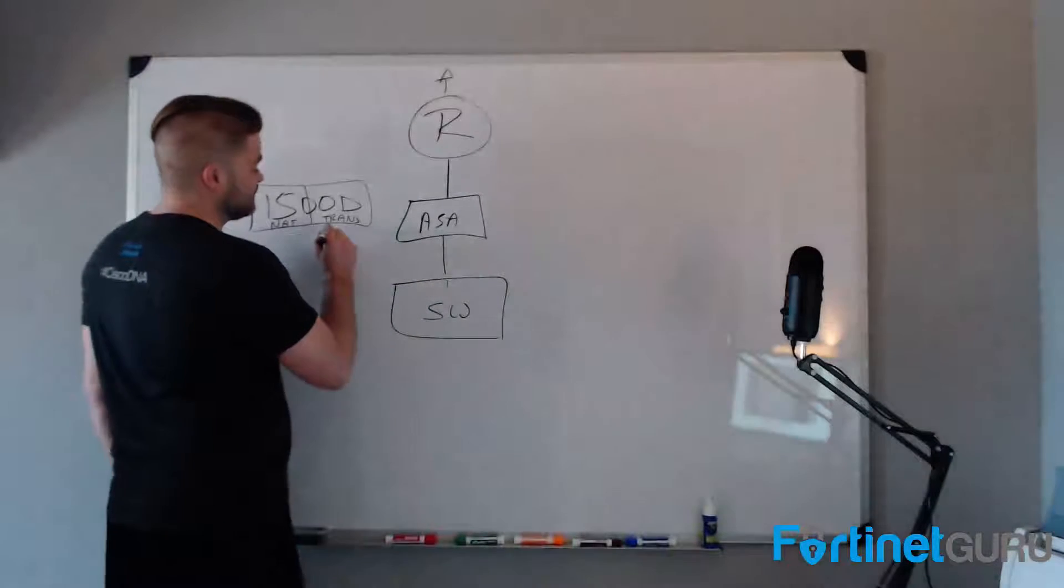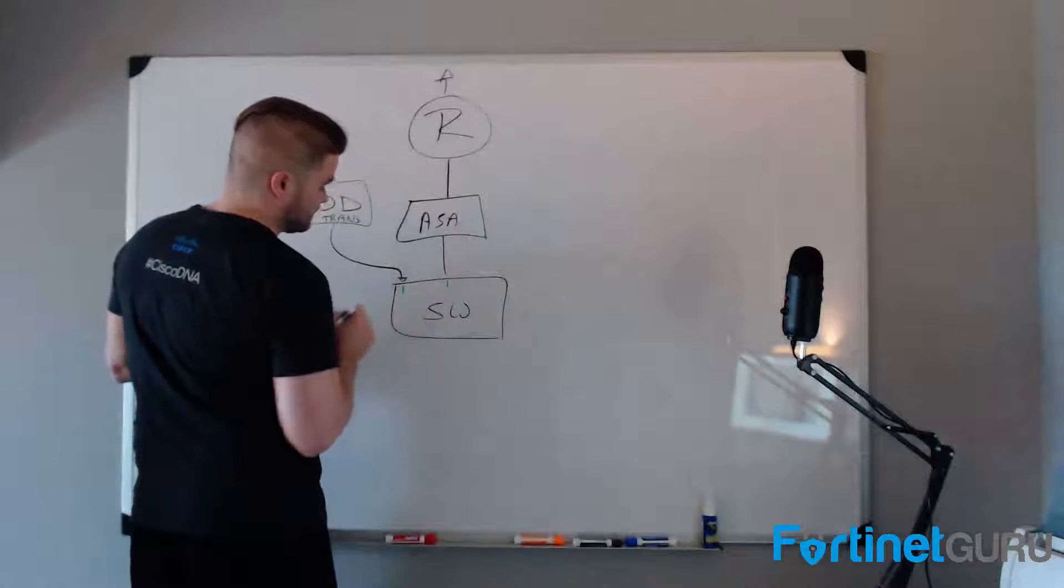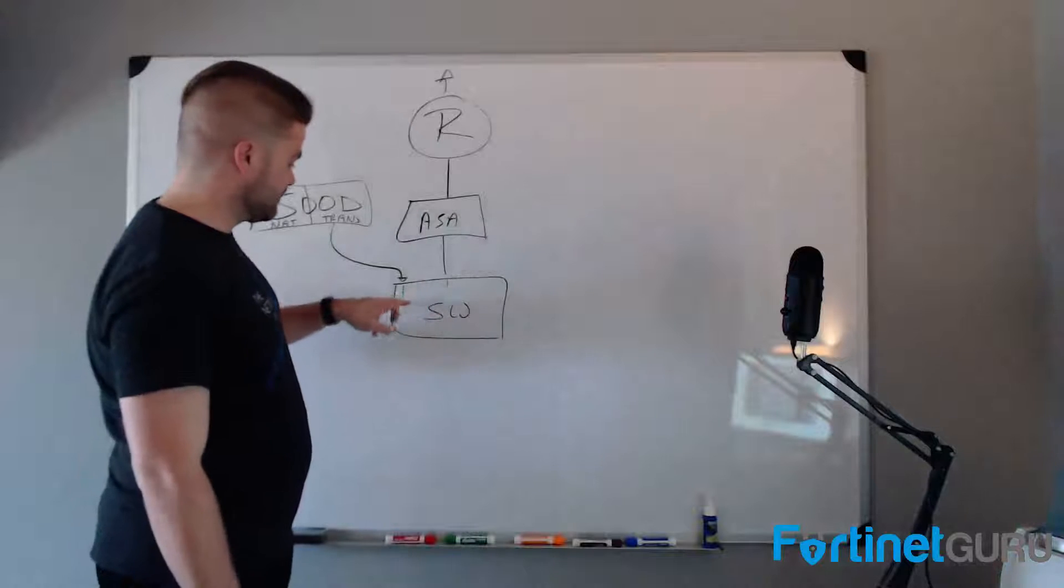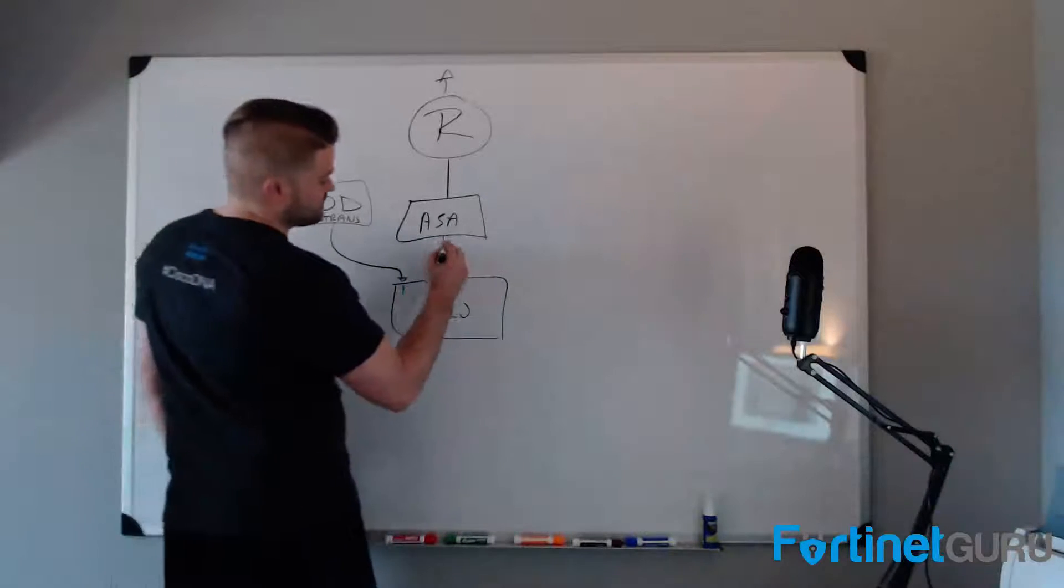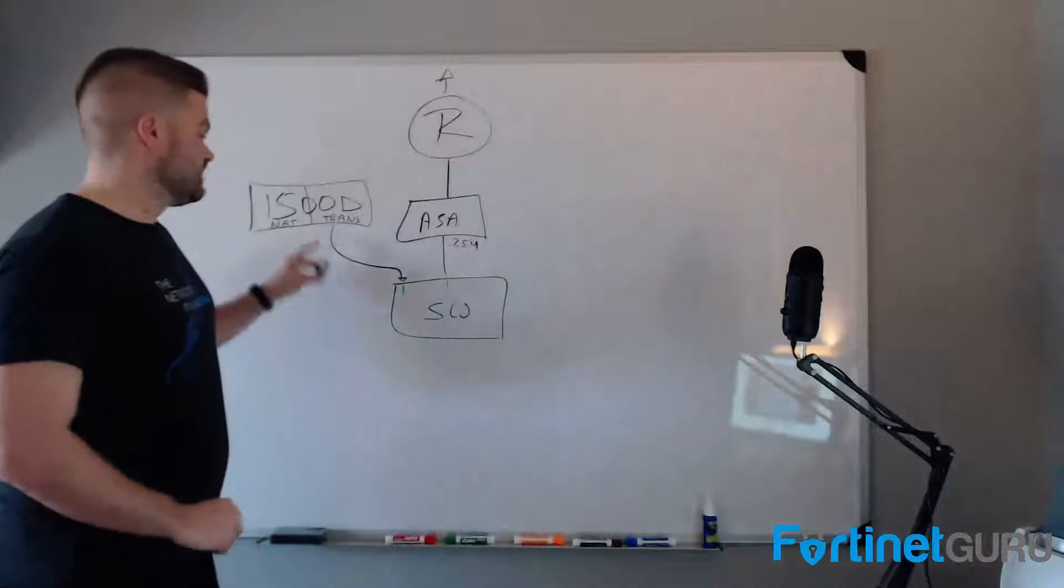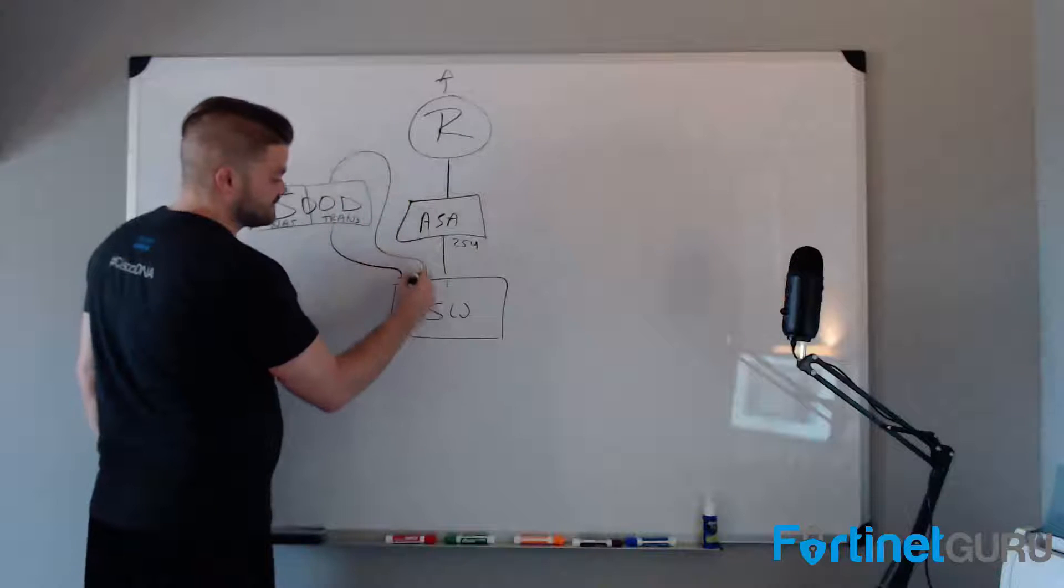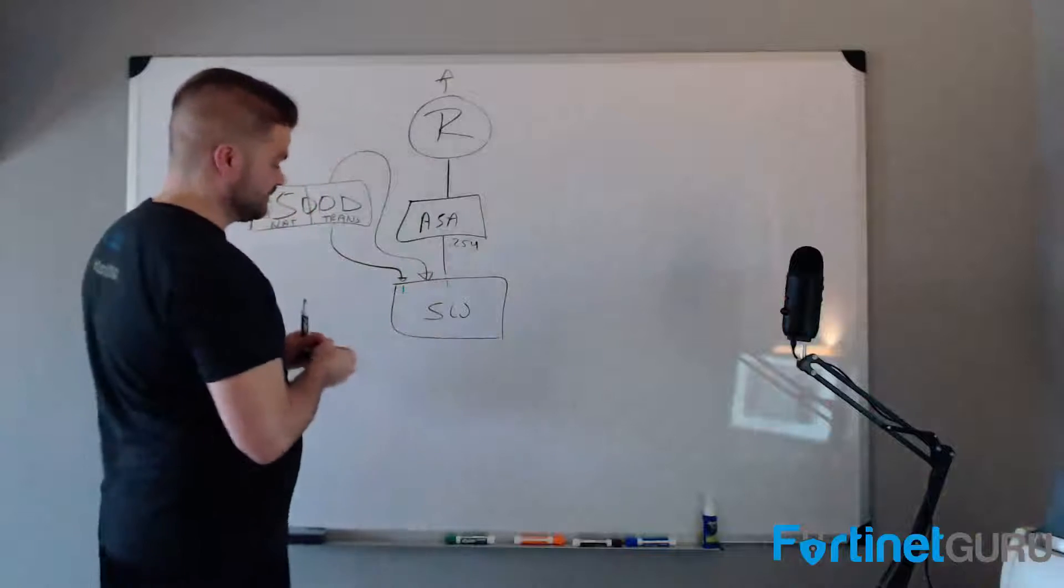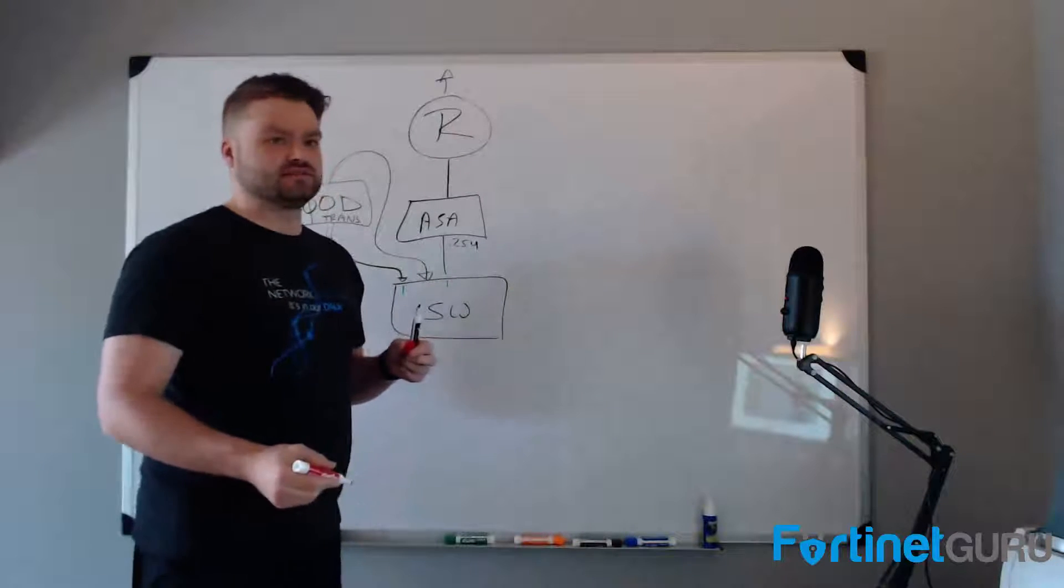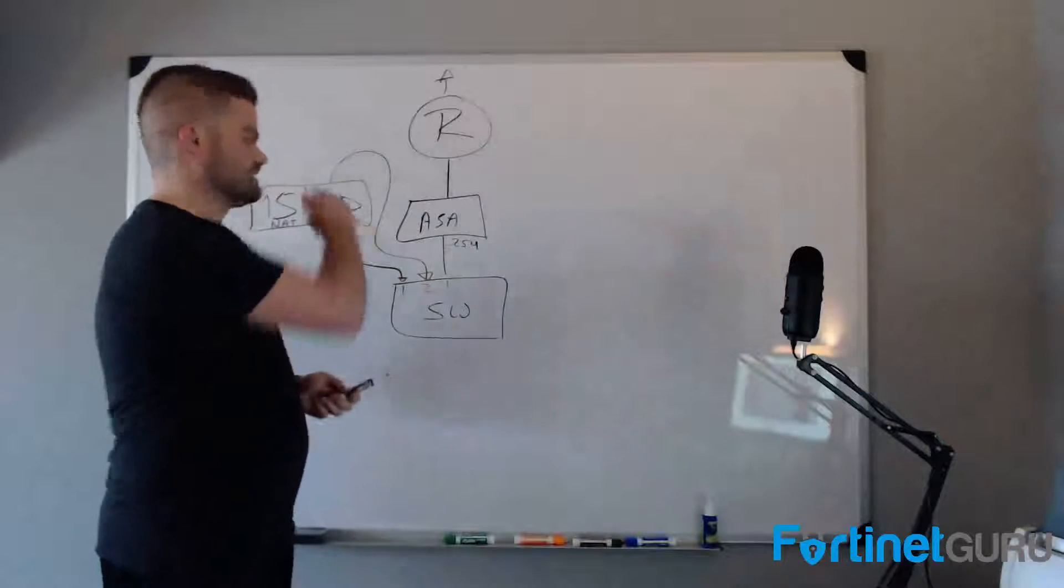So, basically, what we did was we took the inside interface of the transparent VDOM, and we put it on an interface that was tagged for the original external interface's native VLAN. So, they were both on VLAN 1. And just for example, we'll say that the inside interface for the ASA was .254. .254 was the default gateway to go out. So, we have our inside interface on the same VLAN as the existing default gateway. And then we took our outside interface, and we connected it to a port that was on a new VLAN.